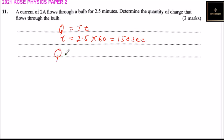The charge that flows through the bulb equals 2 multiplied by 150, and that will give you 300 coulombs.